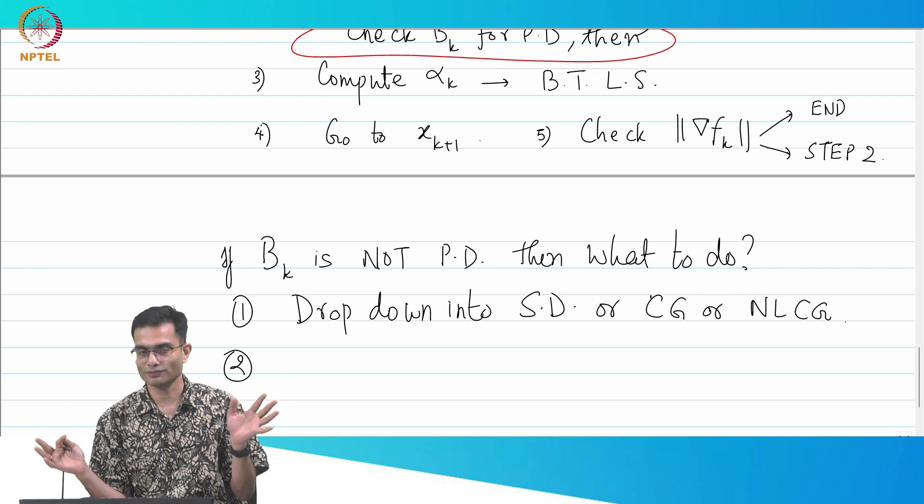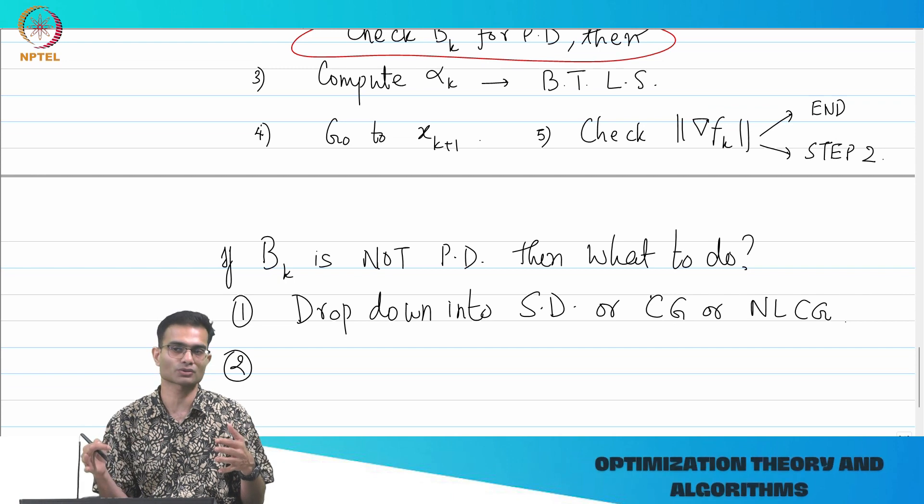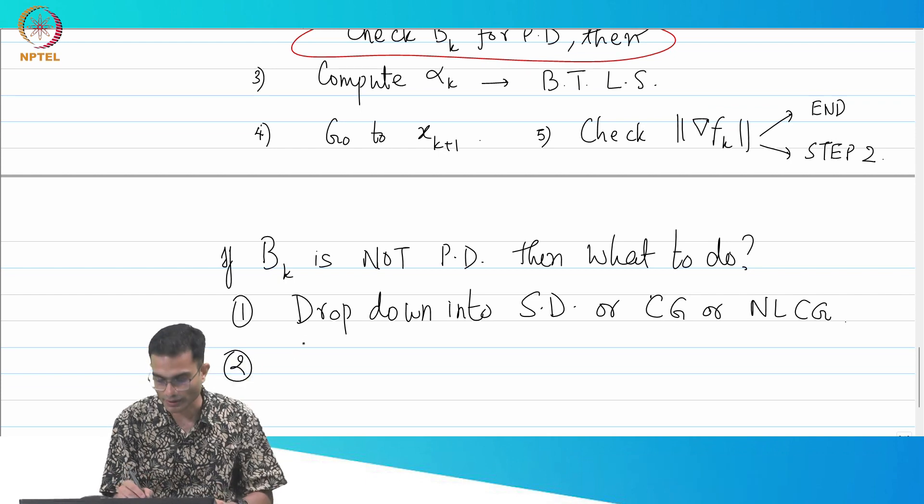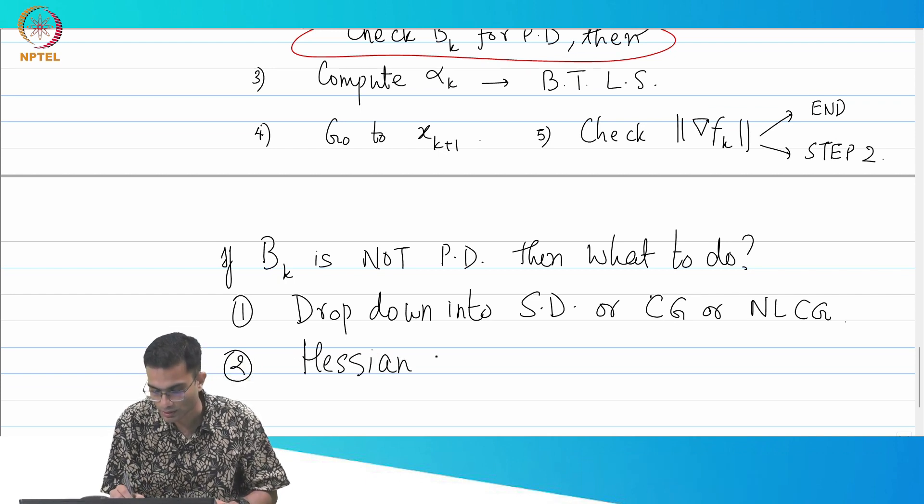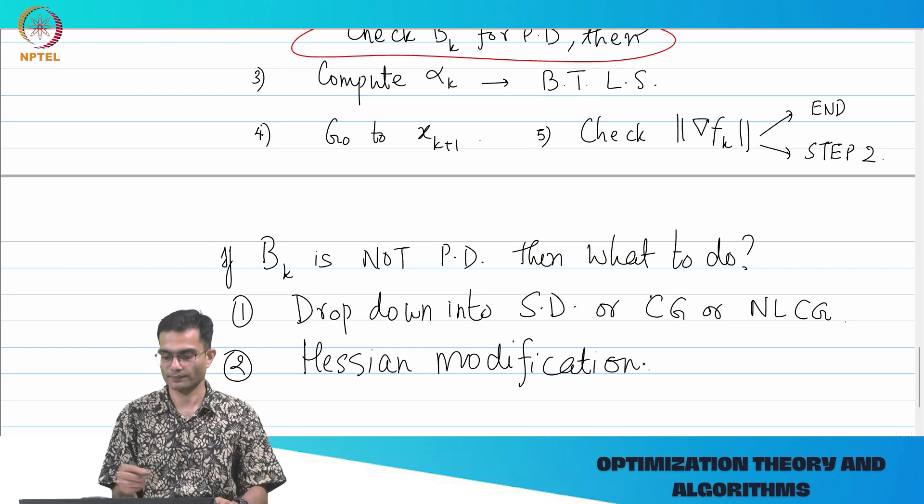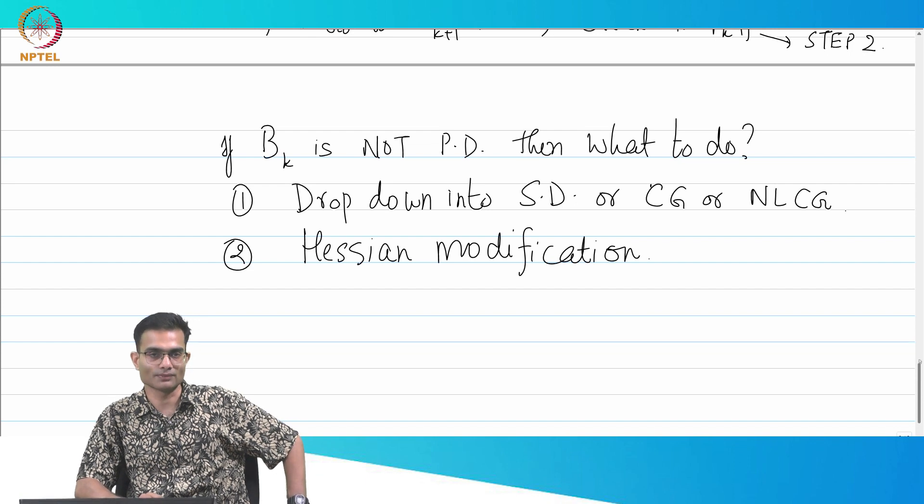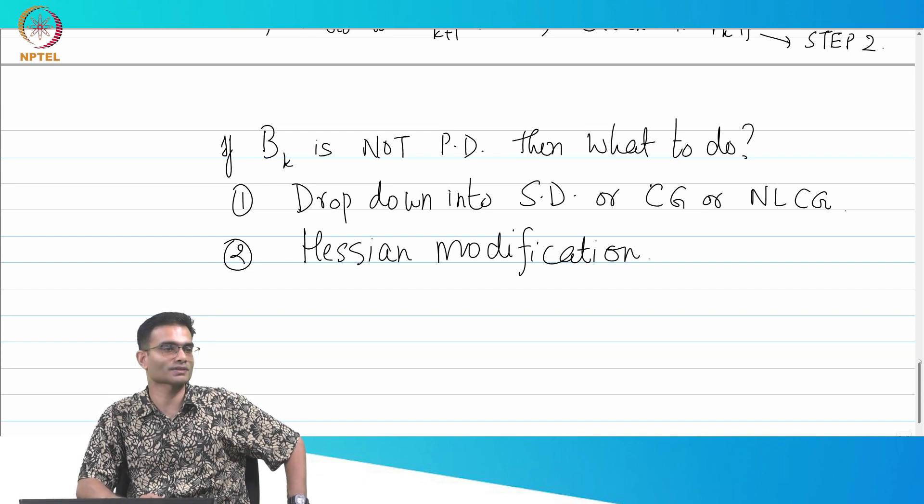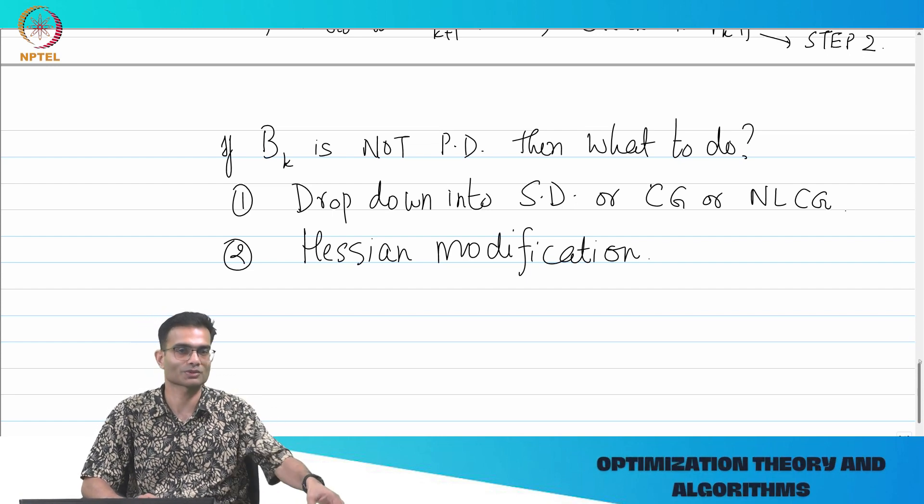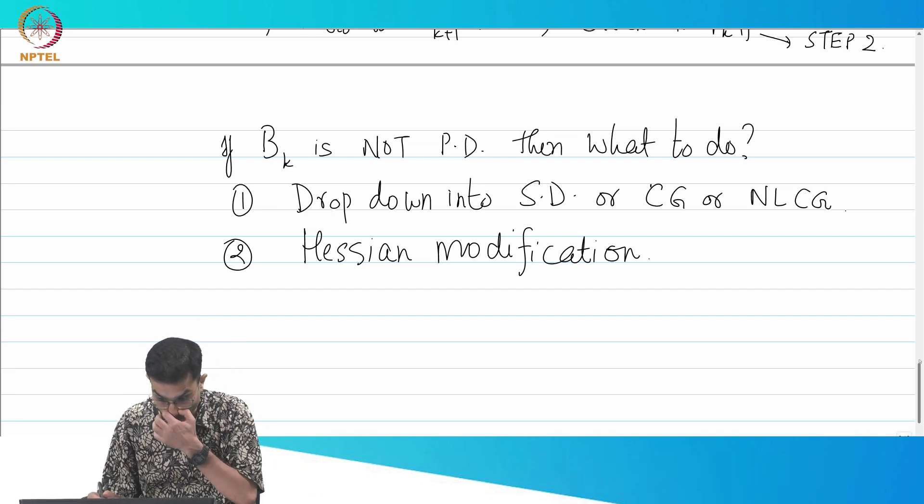A disadvantage of course is, what would be the disadvantage of doing this? You will lose the quadratic rate of convergence. But in this case, you have no, it seems like you have no choice. So, one possibility is drop down into steepest descent or CG or non-linear CG, depending on the problem. Now, it turns out there is another, there is an entire family of tricks that people do. The book has a long discussion of different tricks to do. So, what I am going to do is tell you about one of them. And one of them is Hessian modification.